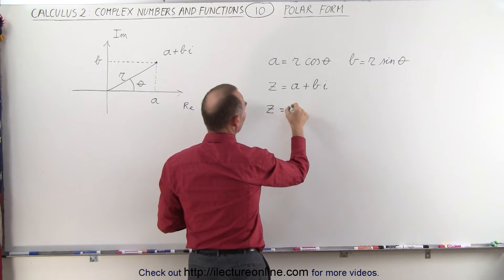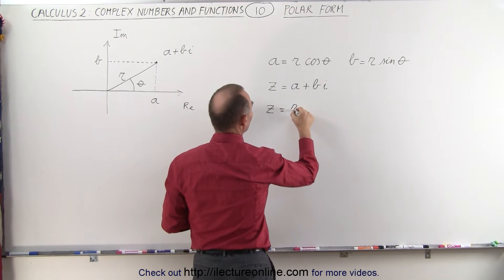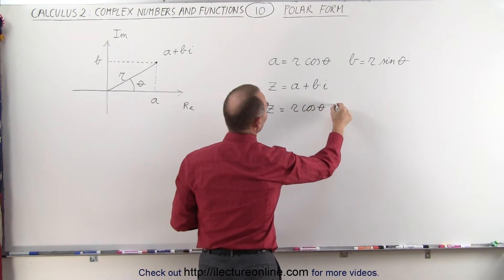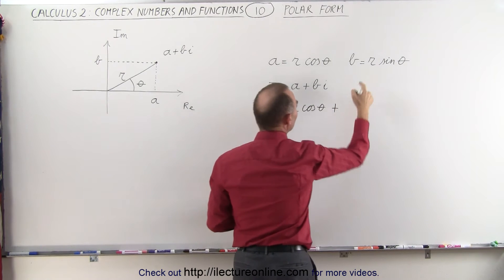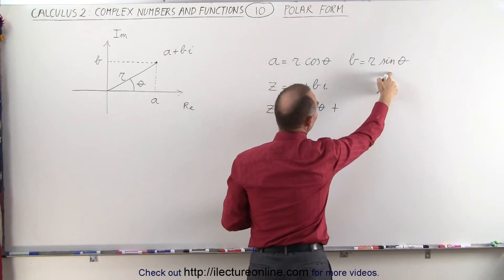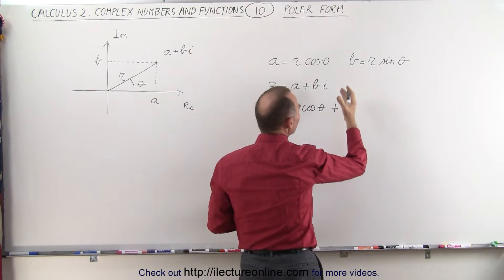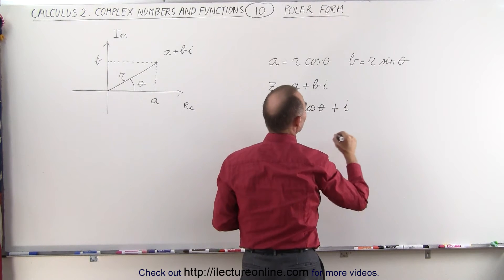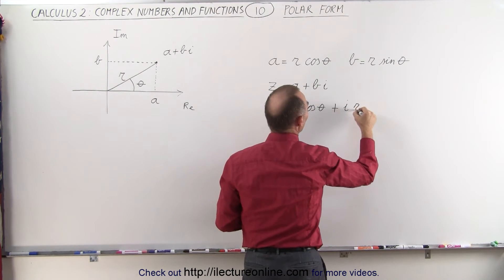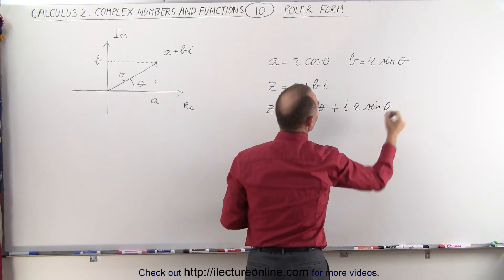Z now becomes equal to A, which is R times the cosine of theta plus B I, and B is R times the sine of theta. But now it looks better if we put the I in front, so I times R times the sine of theta.